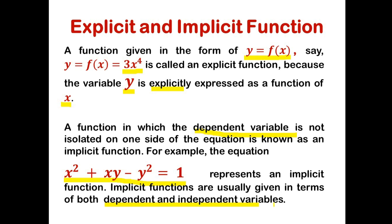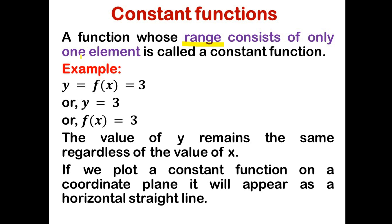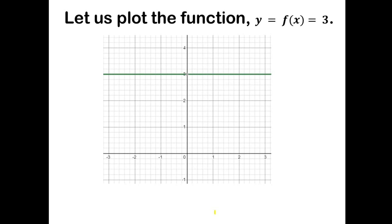A function whose range consists of only one element is called a constant function. For example, y equals f of x equals 3 is a constant function. In this case y takes only one value, that is 3, and remains the same regardless of the value of x. If you plot a constant function on a coordinate plane it will appear as a horizontal straight line. On plotting y equals 3 we can see that it is a horizontal straight line parallel to the x-axis.